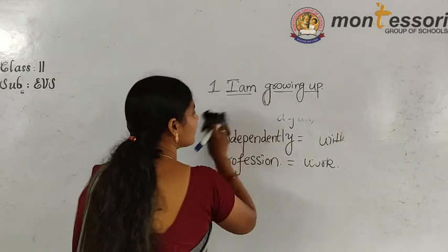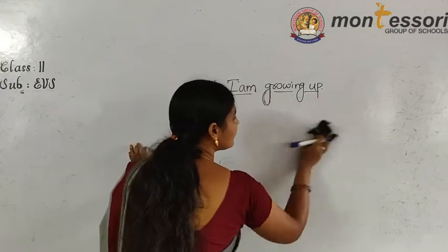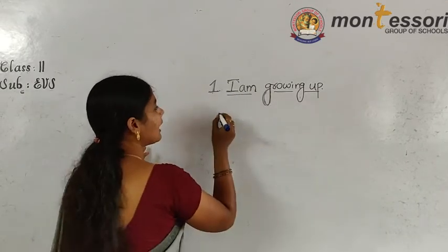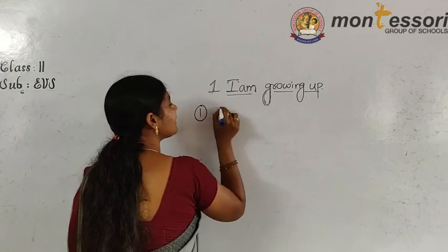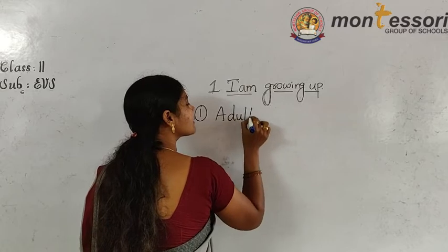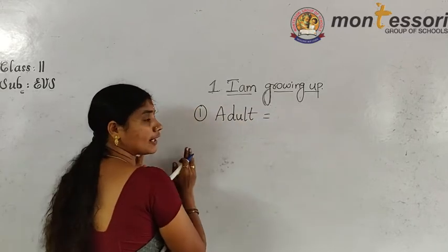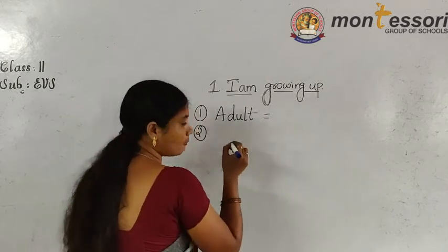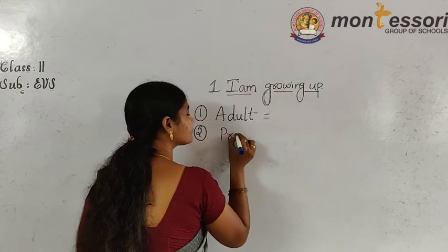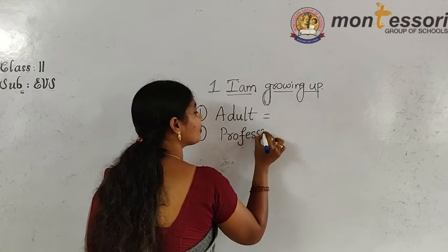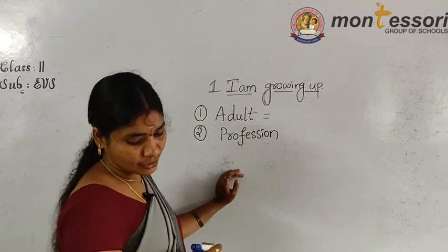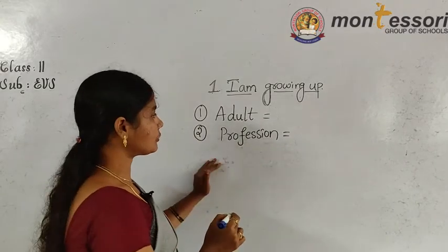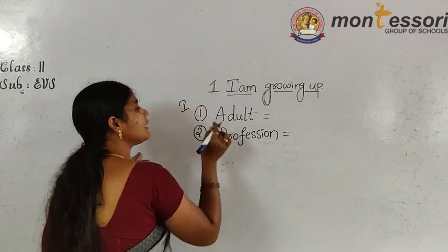What are the questions I am giving to you now? Write the meanings of these words. First question: what is the meaning of adult? You should write - adult means what? I taught it just now. Second one: what is the meaning of profession? You should write the meaning of profession. These are the two meanings you need to write - the meaning of adult and the meaning of profession.